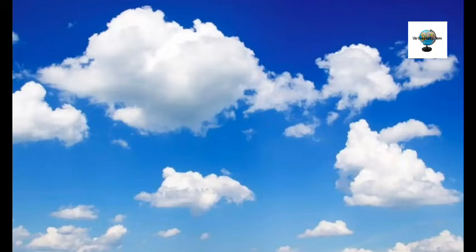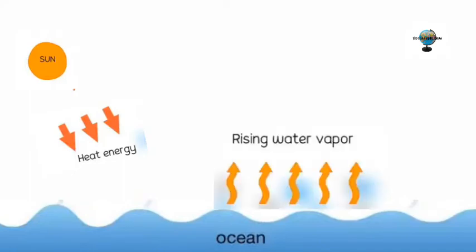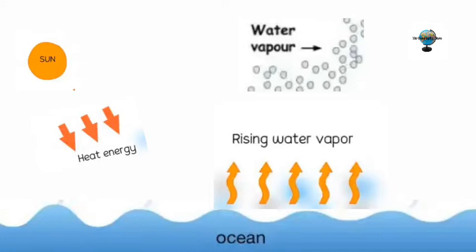Now we will look at cloud formation process. Heat from sun hits ground which makes the surface warm and also the surrounding air. Warm air rises with moisture along with it. As the altitude increases, the temperature decreases.